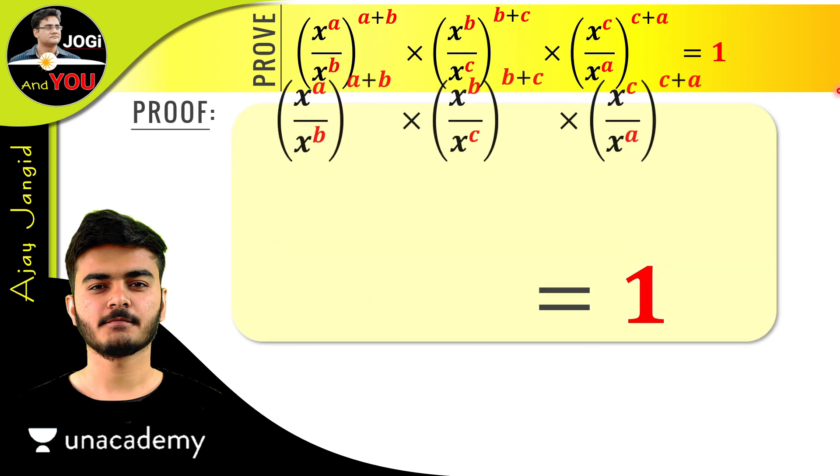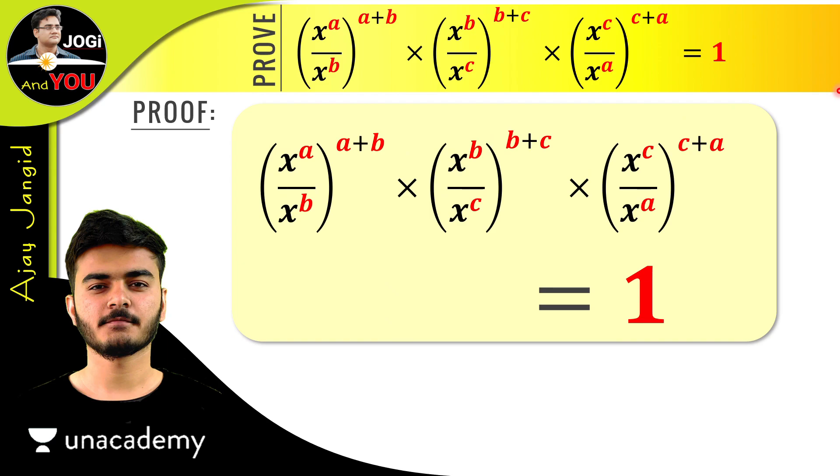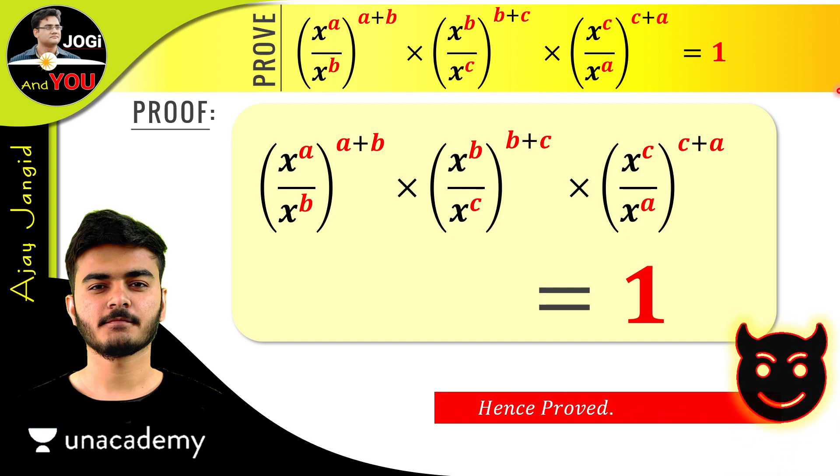The actual expression was in this form. So now it's proved that the given expression is equal to 1. Did you see how simple it was to prove it equal to 1 while the given expression was too complicated? Anyone who wants to write down the question can do so by pausing the video.